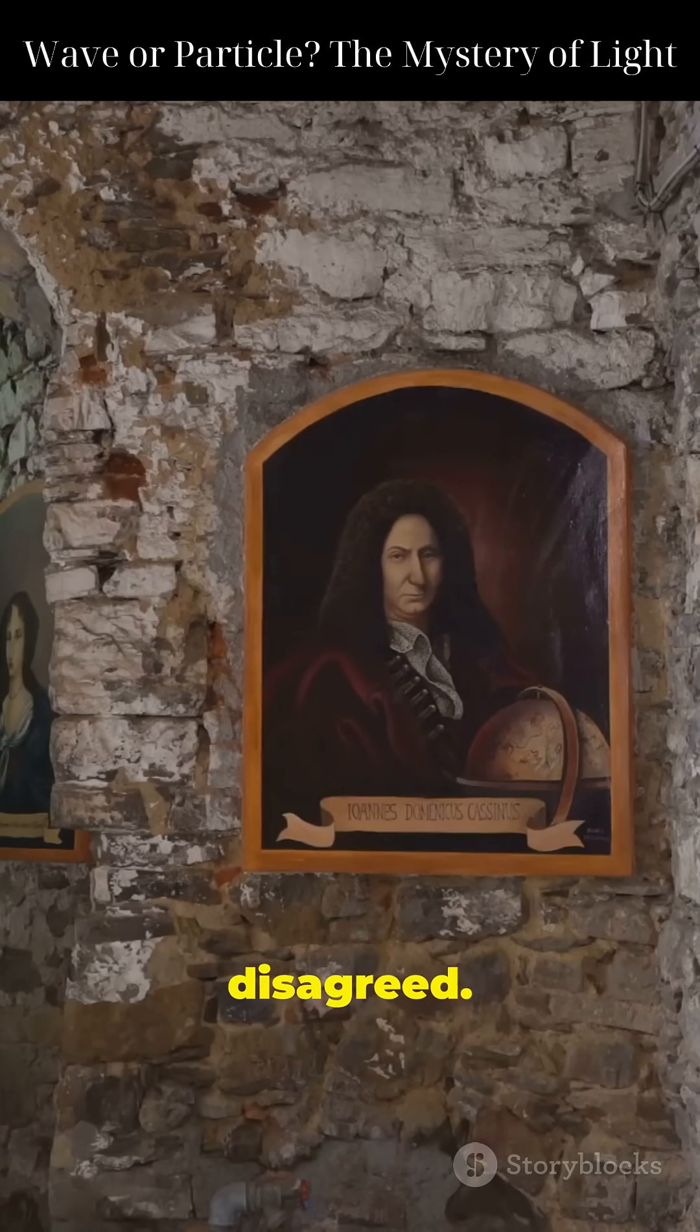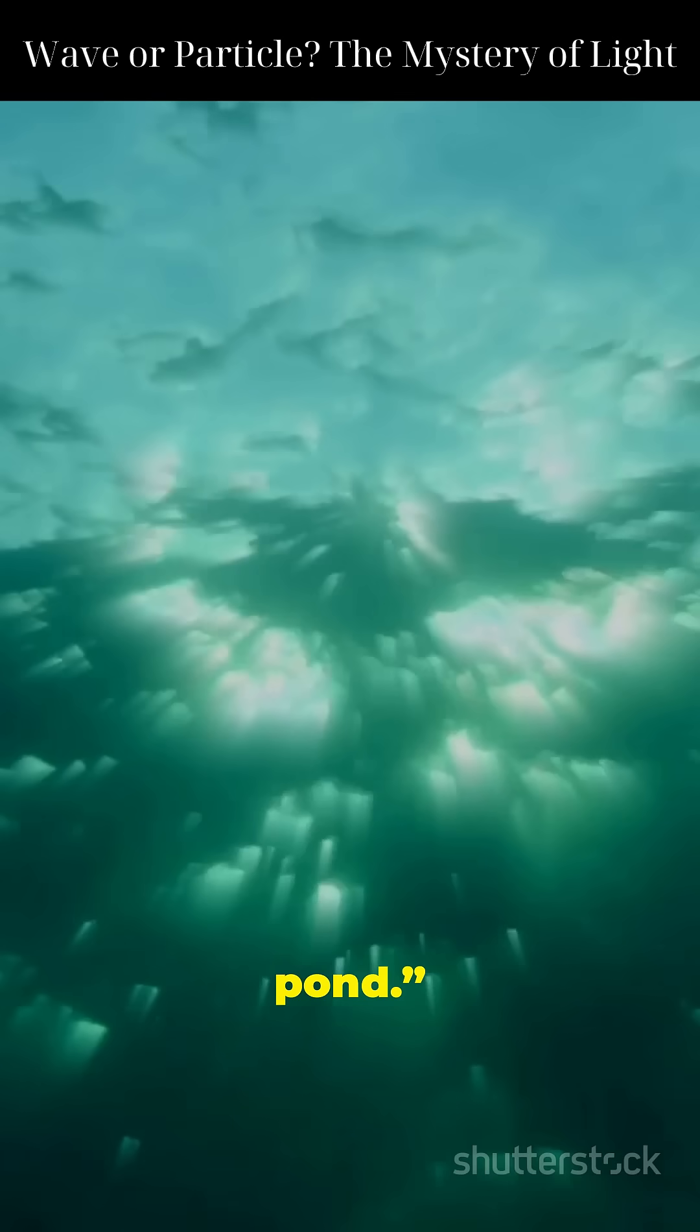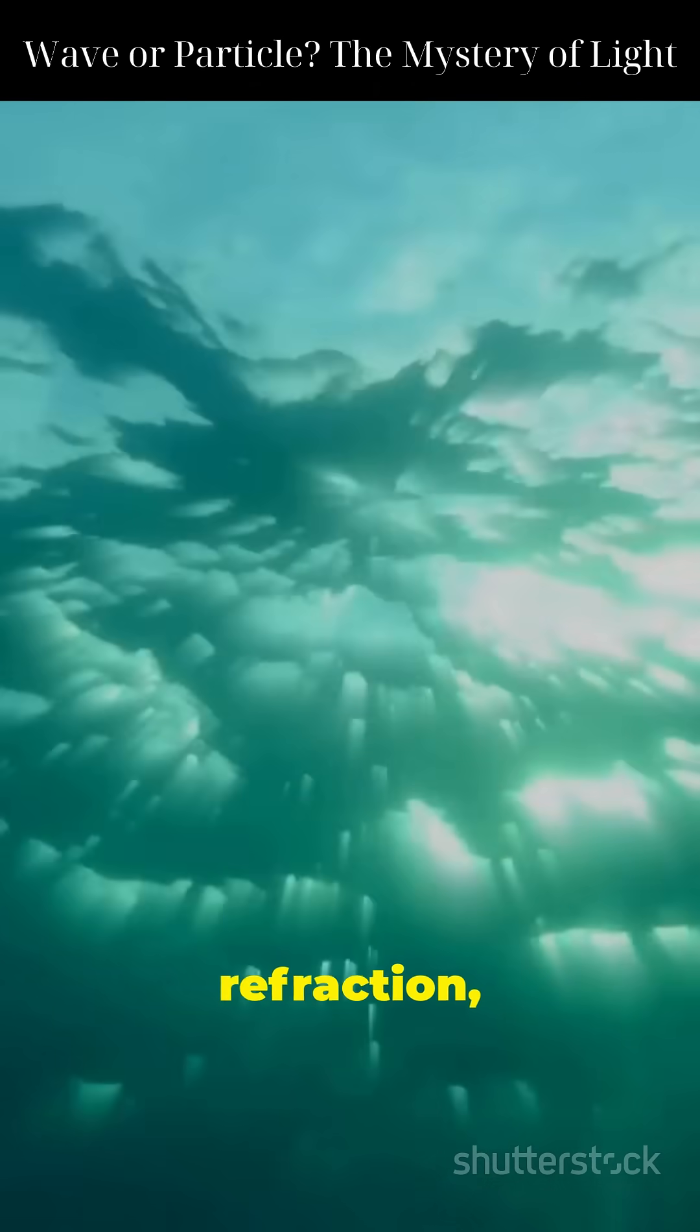But Christian Huygens disagreed. He claimed light is a wave like ripples in a pond. Waves explained reflection, refraction, and interference.